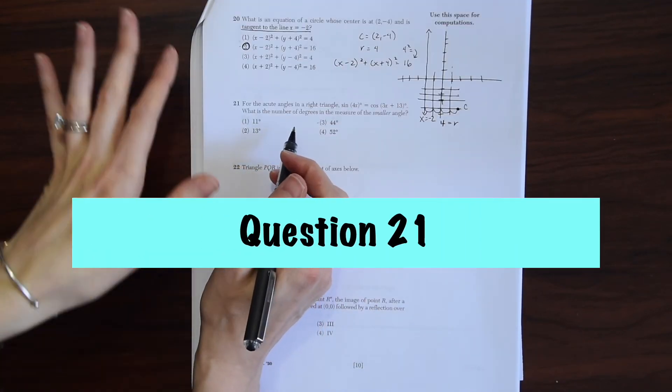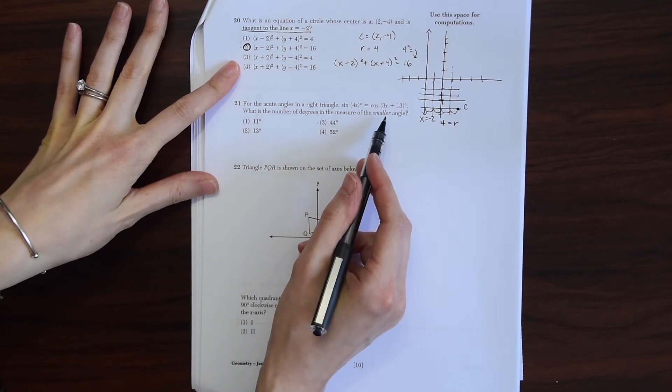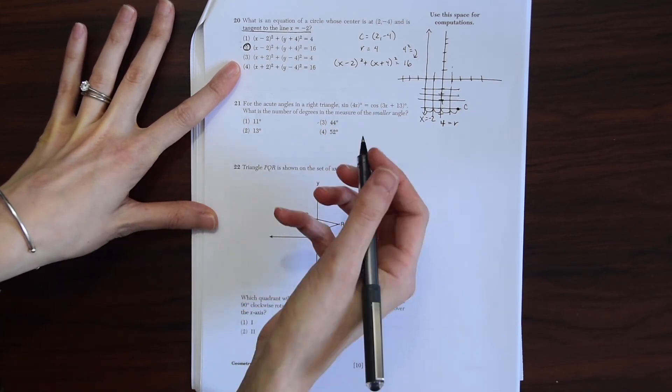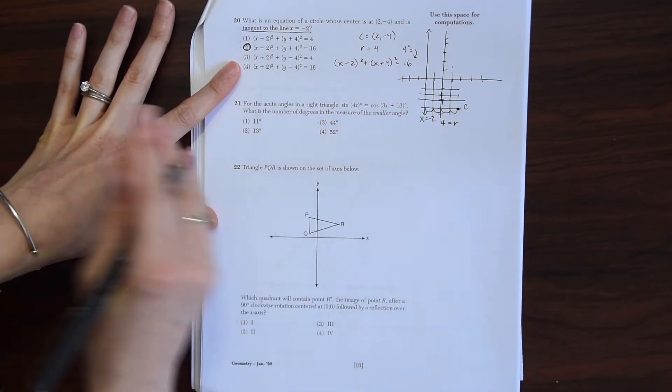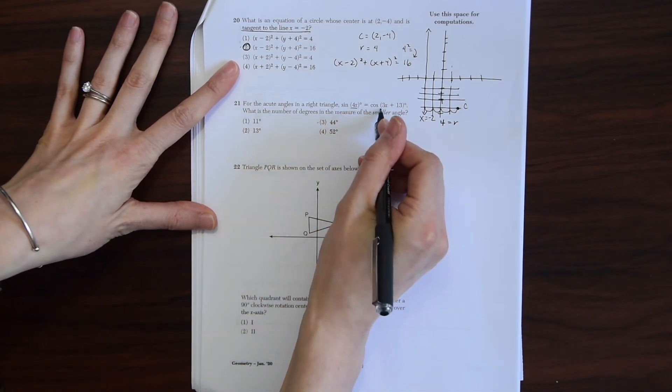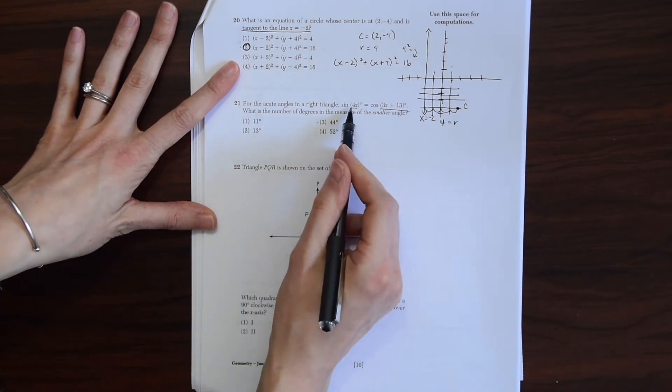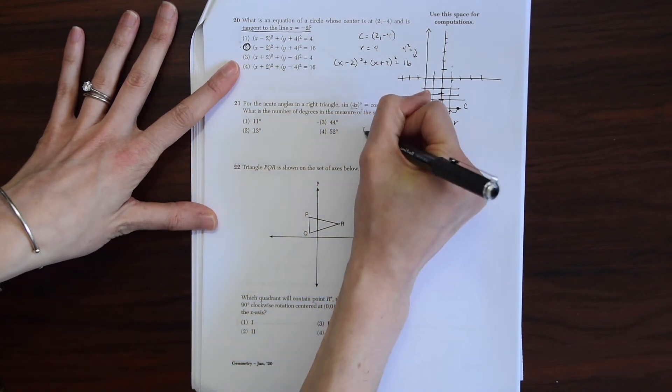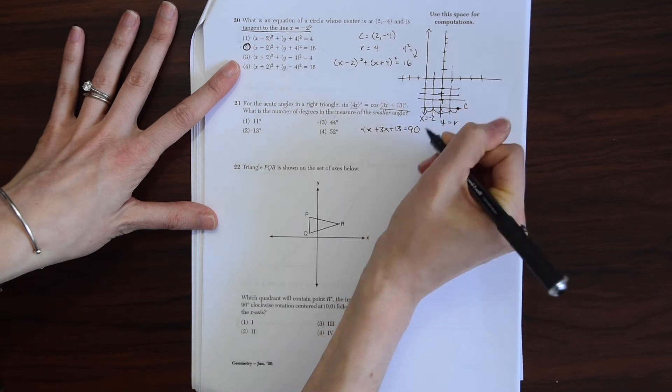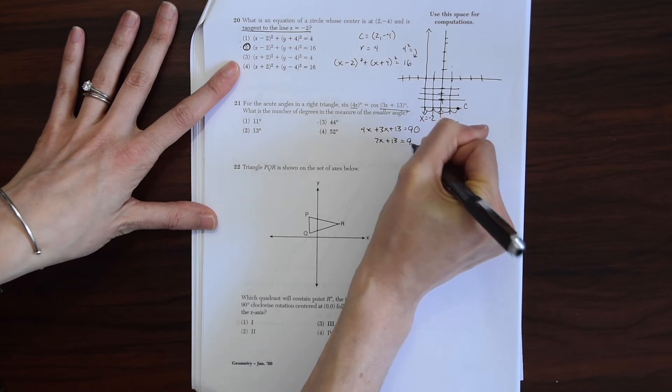Number 21. For the acute angles in a right triangle, sine of 4x equals cosine of 3x plus 13. What is the number of degrees in the measure of the smaller angle? The acute angles in a right triangle add to 90 degrees. So knowing that, we can just add these two angles together and set it equal to 90 and then solve for x. We have 4x plus 3x plus 13 equals 90. Just combining like terms gives us 7x plus 13 equals 90.